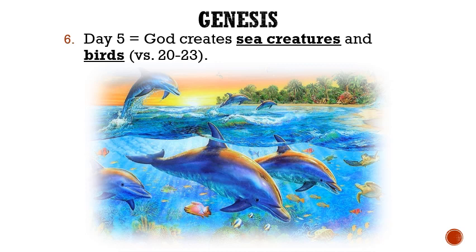On the fifth day, God creates sea creatures and birds. In verse 20 it says, 'And God said, Let the waters bring forth abundantly the moving creature that has life, and fowl, or birds, that may fly above the earth in the open firmament of heaven.' Some people believe this is a support for theistic evolution — that God created everything but then caused it to evolve. However, the words bring forth in the Hebrew just means abound with. In other words, let the waters abound with the moving creatures, the fish, that have life, and the fowl, the birds, in the heavens above.